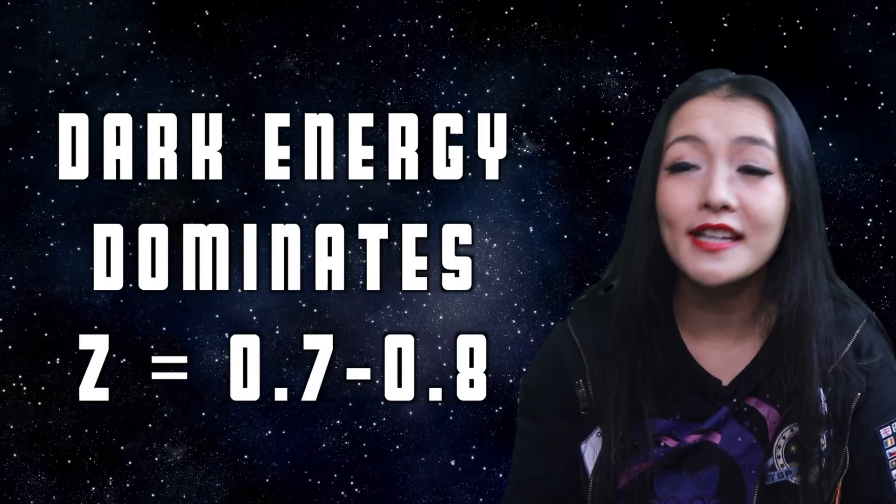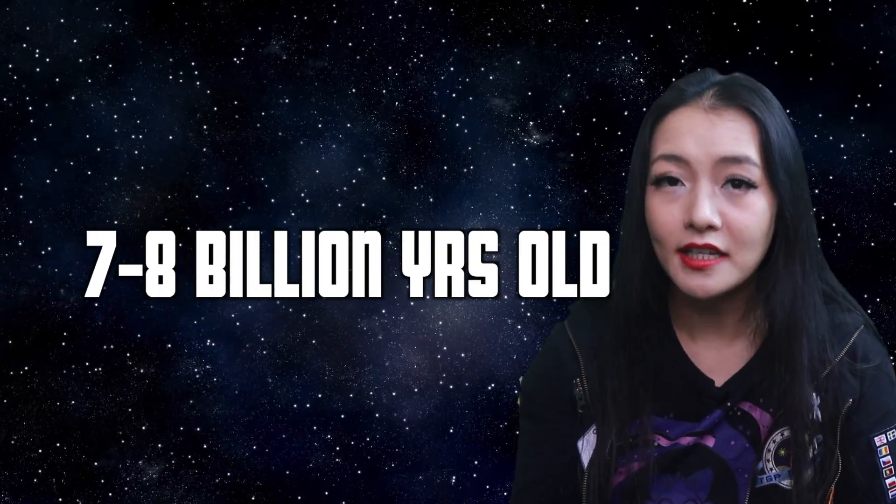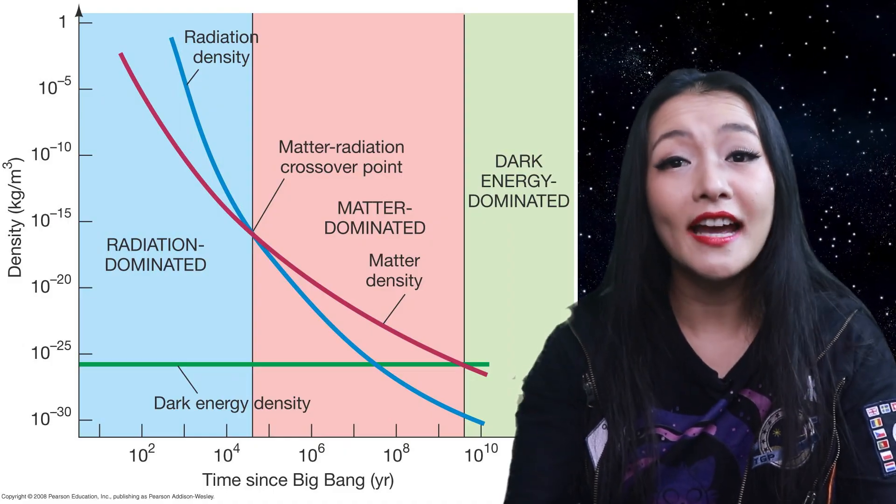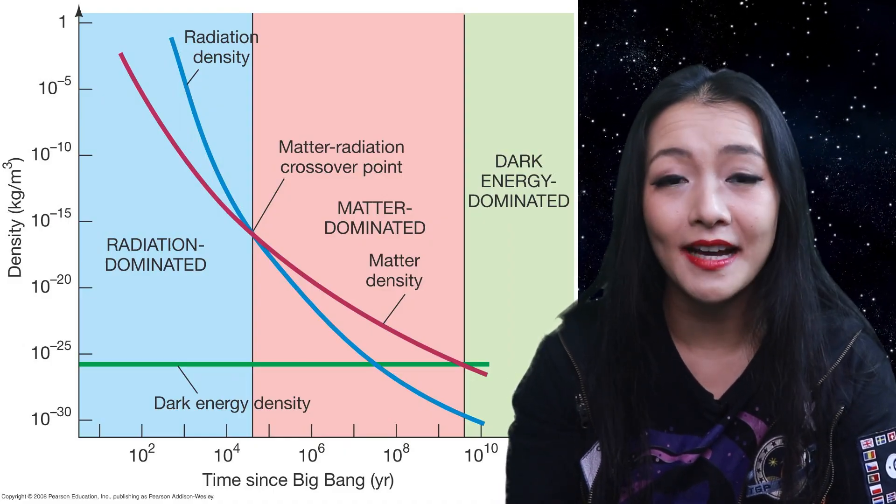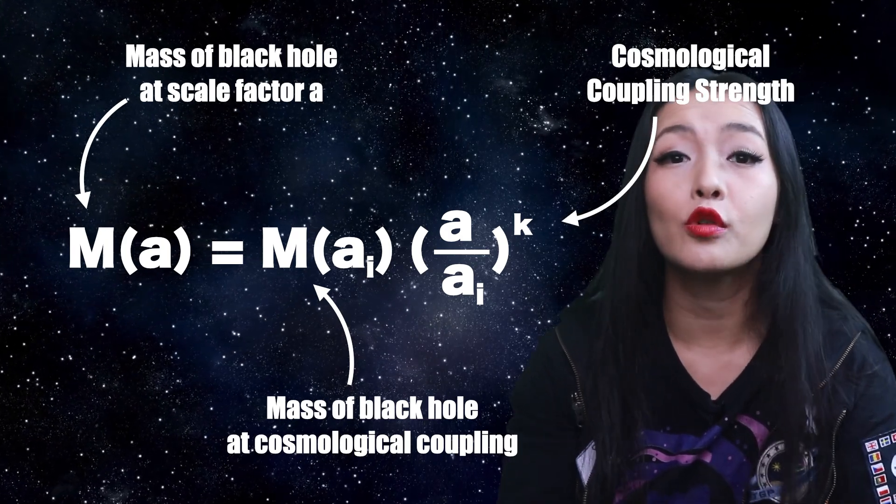And in this case, dark energy became dominant in our universe at a redshift of about 0.7 to 0.8, when the universe was about 7 to 8 billion years old. This was when the energy density of dark energy exceeded that of matter. K is a measure of the cosmological coupling strength.